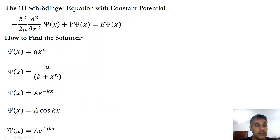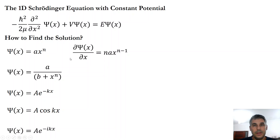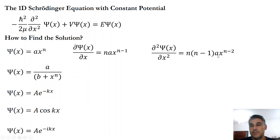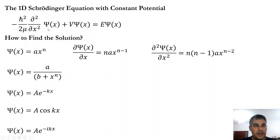We can try a cosine function and a complex exponential function, and we will see that the last two are solutions to the Schrödinger equation. For the polynomial case, taking the first derivative gives n times a times x to the power of n minus 1, and the second derivative gives n times (n minus 1) times a times x to the power of n minus 2. If we replace these into the Schrödinger equation, we get different powers of x: x to the power of n minus 2 in the first term but x to the power of n in the other terms, so this cannot work.